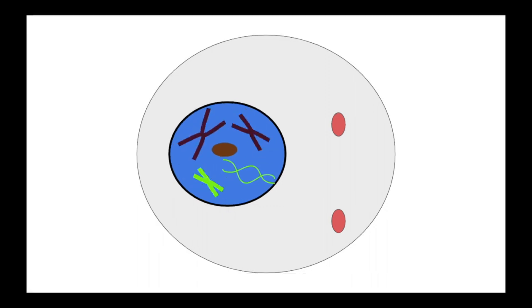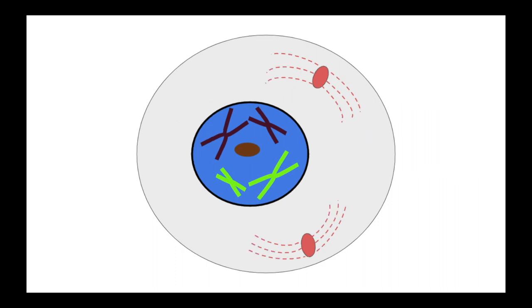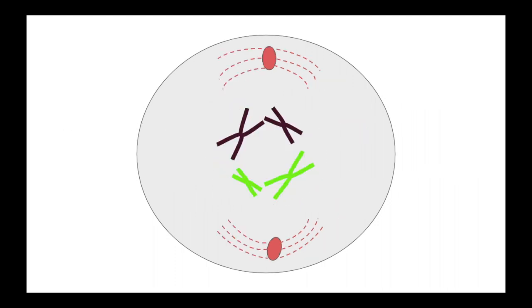Prophase involves DNA condensing from chromatin into chromosomes with two sister chromatids, spindle fibres forming from the centrosomes, and the nuclear membrane breaking down.